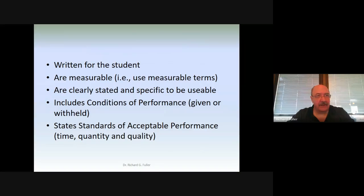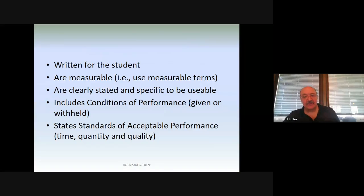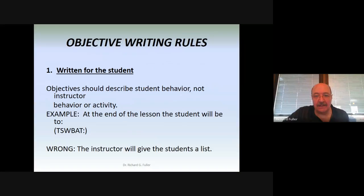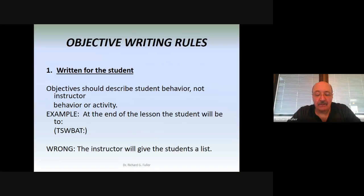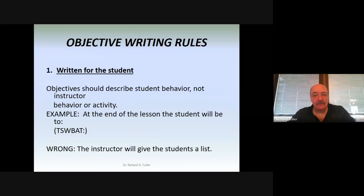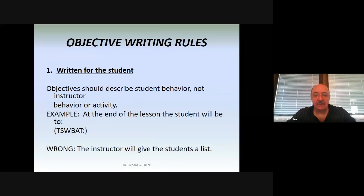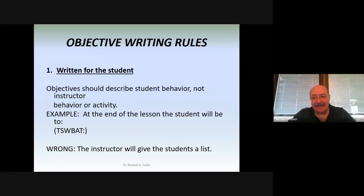When writing objectives, if you start out every objective with 'At the end of the lesson, the student will be able to' — abbreviated TSWBAT — it automatically flows that the next part of the sentence adds what the student will do. For example: 'At the end of the lesson, the student will be able to define the term Java.' That's an objective written for the student. From it, I know I have to give students a definition of Java — maybe on a slide, on a board, in a book, or through discussion.